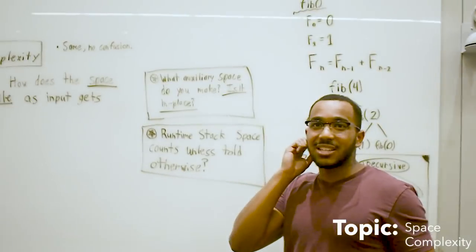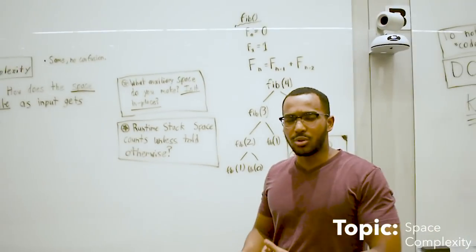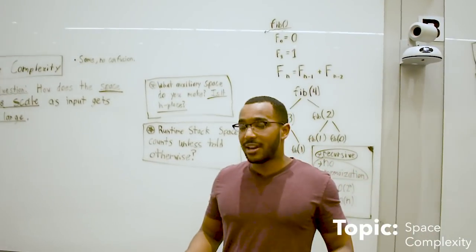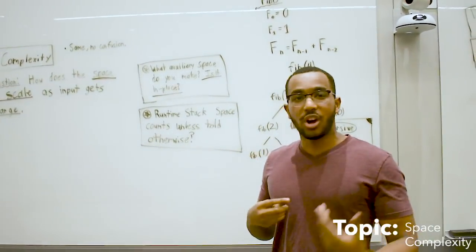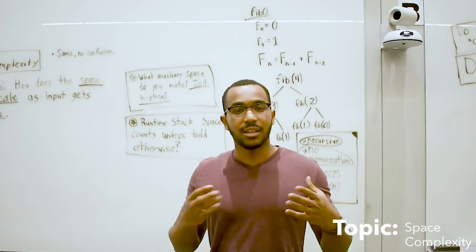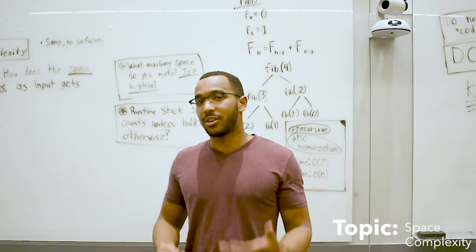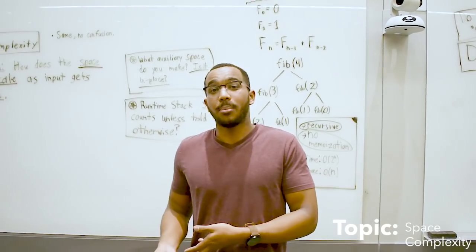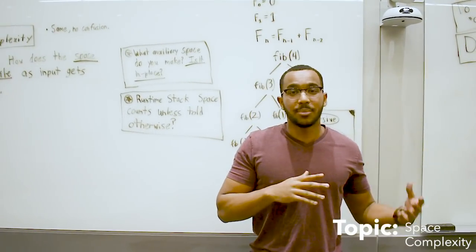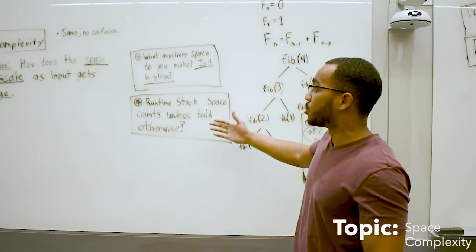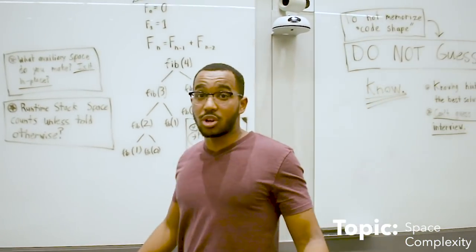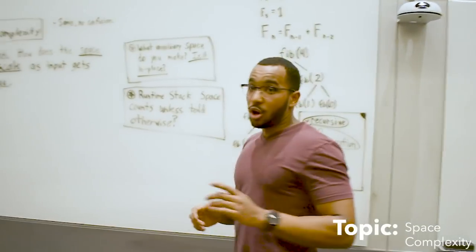The biggest question to ask is what space does your program create? Do you create a single array of n elements? Then you have linear space. Do you create log n elements? Do you create n squared? Do you have an n by n matrix that you're copying over instead of doing something in place? Those are the questions asked. What auxiliary space does your algorithm use? Or is it in place?